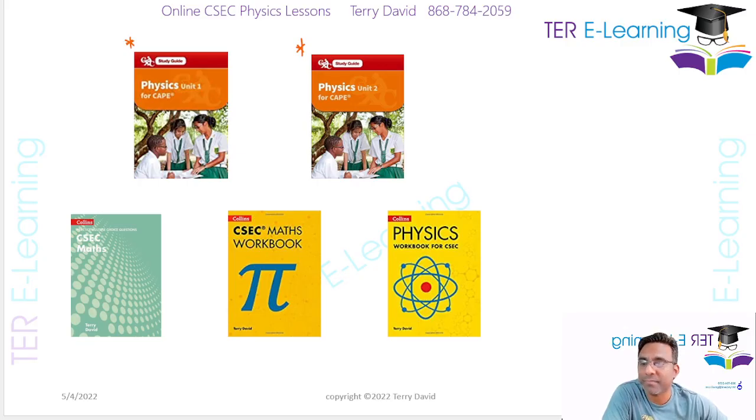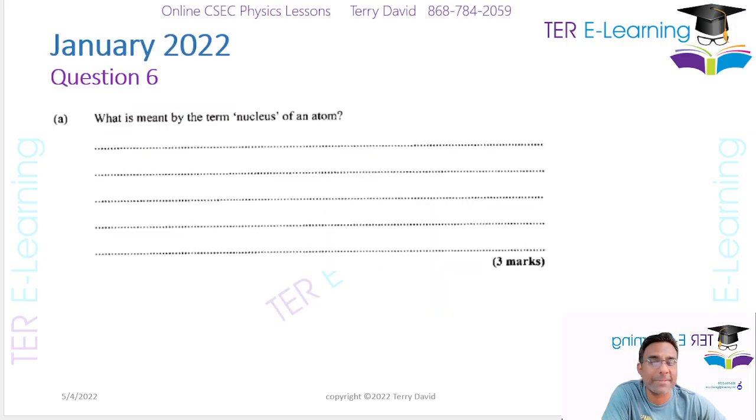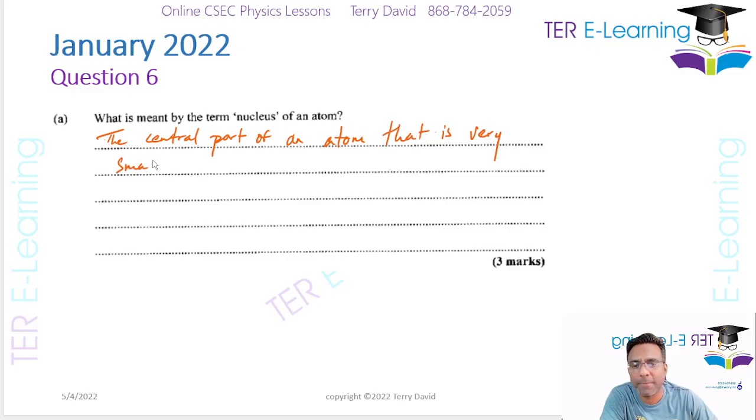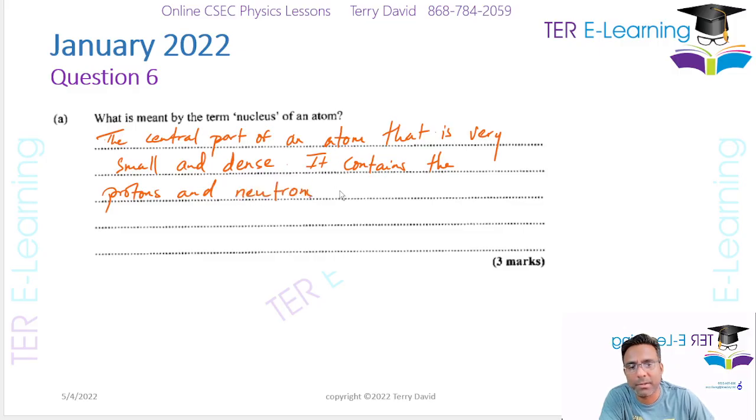I'm gonna look at question six. What is meant by the nucleus of an atom? Now the nucleus of an atom is simply the central part of an atom, which is very small and dense. It contains the protons and neutrons of the atom.